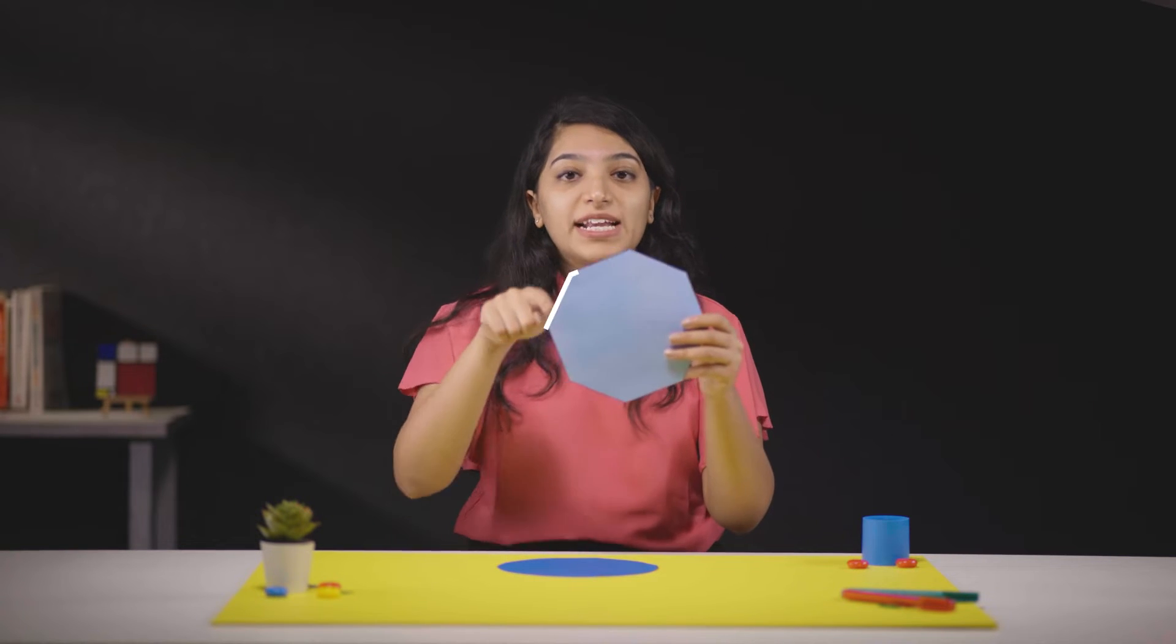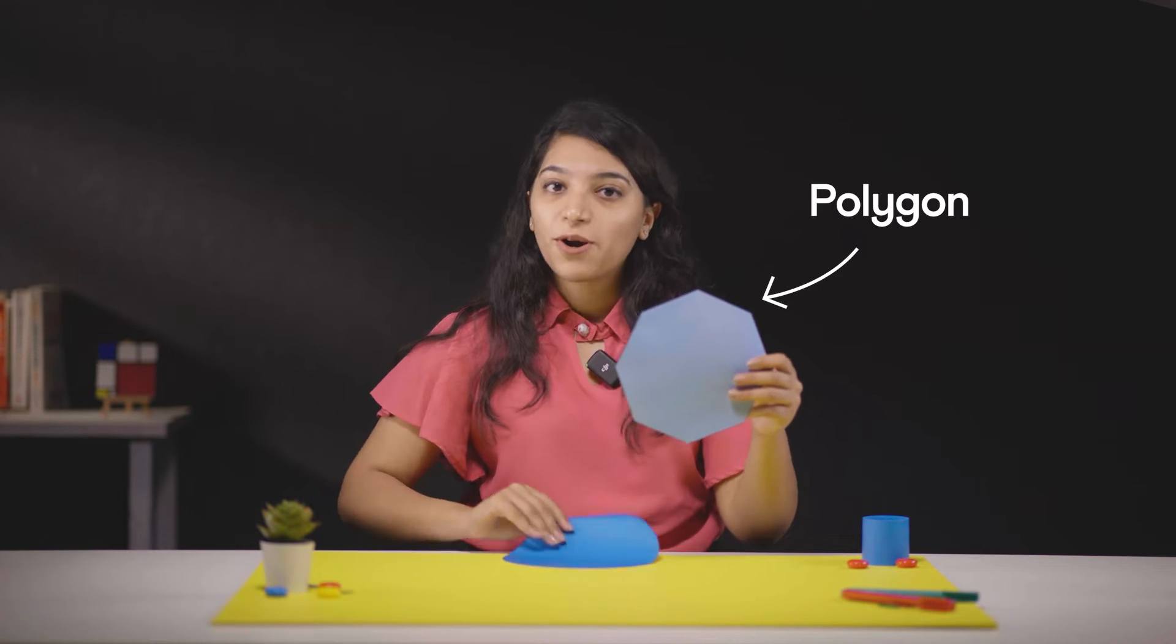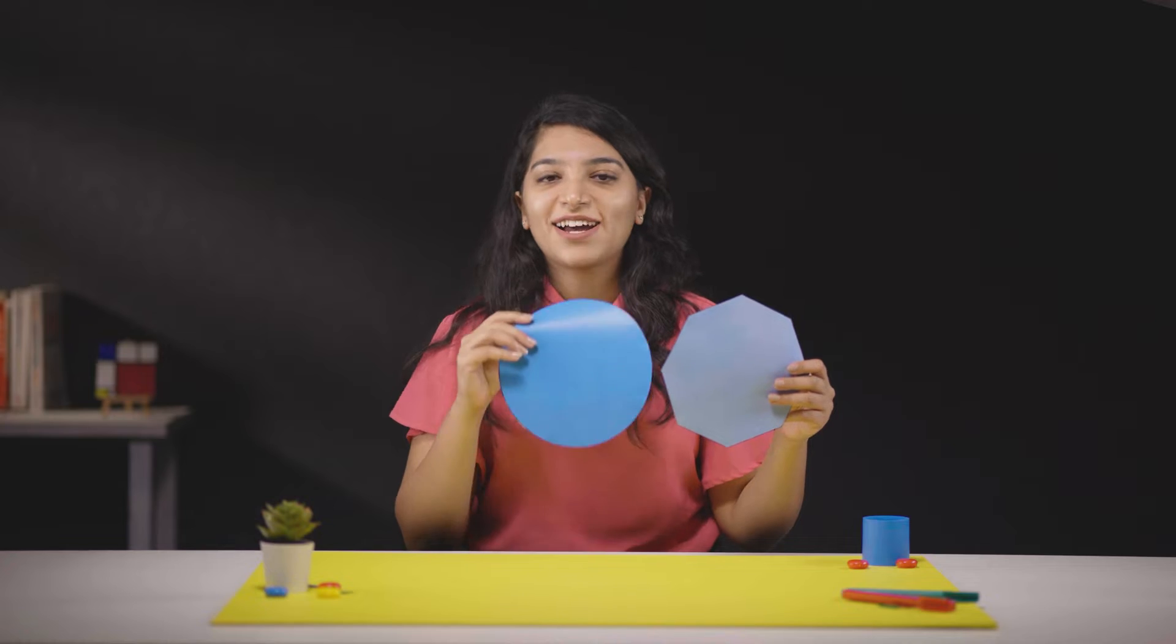So one way is to use familiar shapes made up of straight lines, a polygon, to approximate its area. Let's see how.